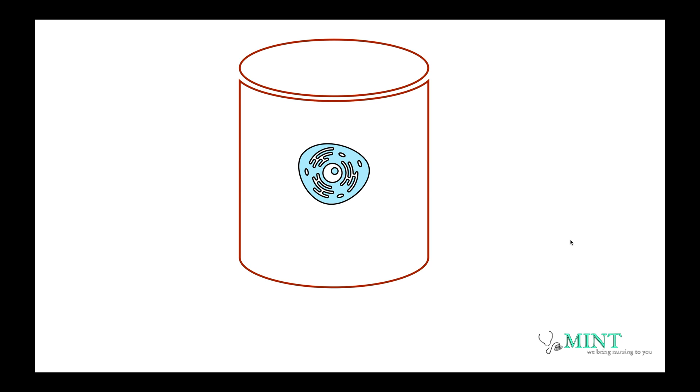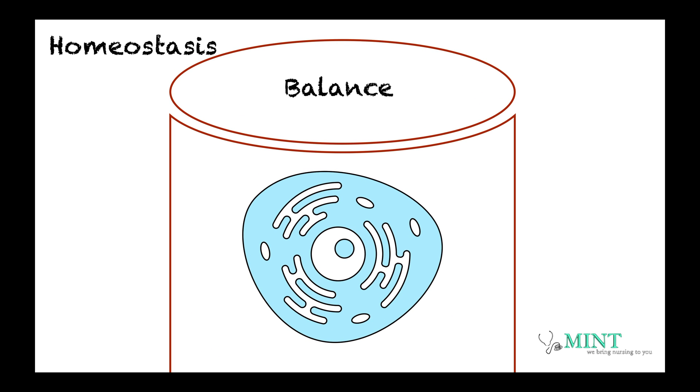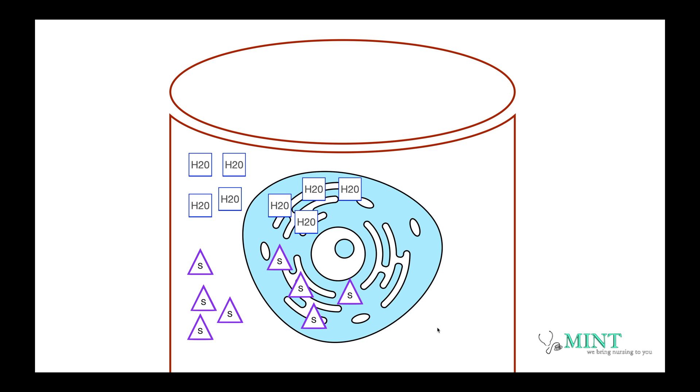The second thing that you have to be familiarized is homeostasis. Now, in a nutshell, it's balance within our cells. Fluids shift in and out of the cells via osmosis. That's the third concept that you need to know. Osmosis is when water moves from a lower concentration to a higher concentration area.